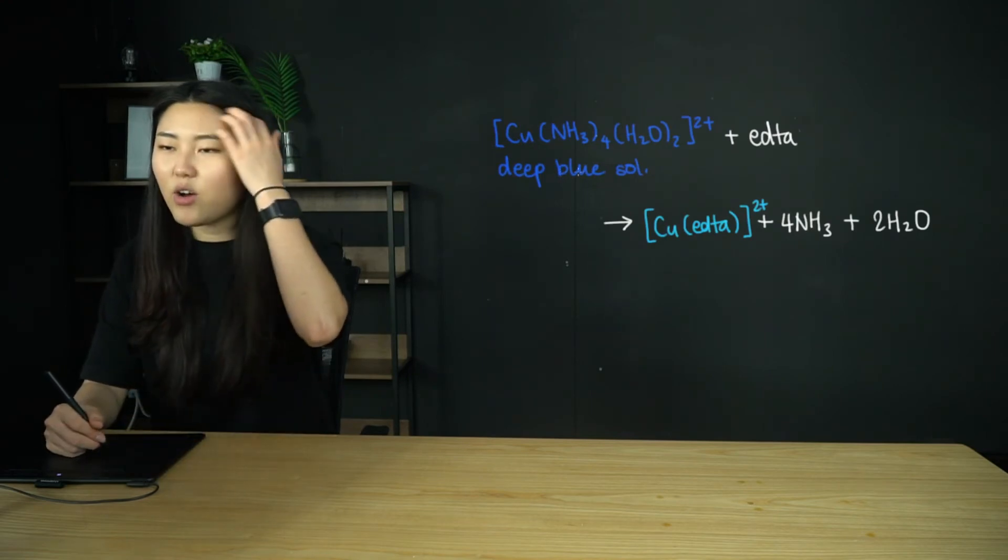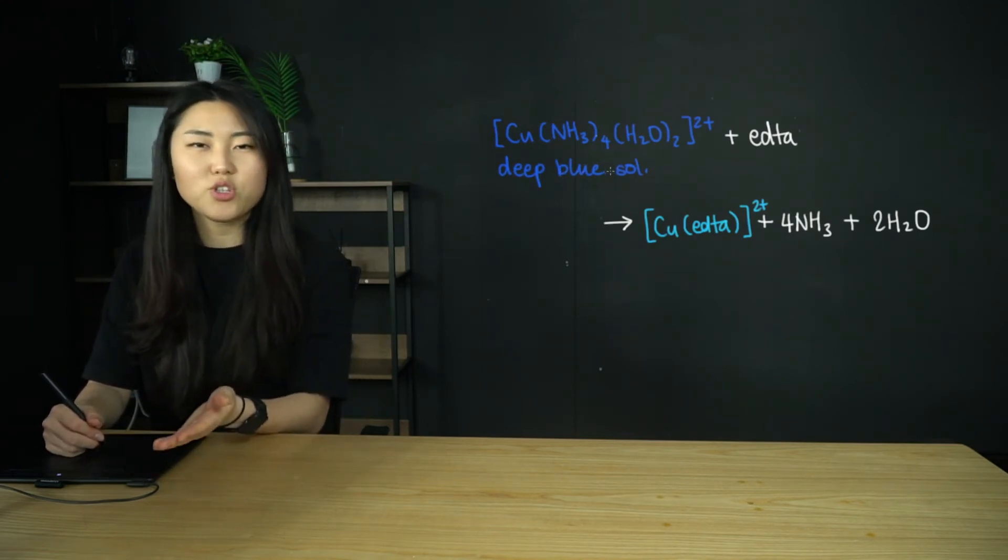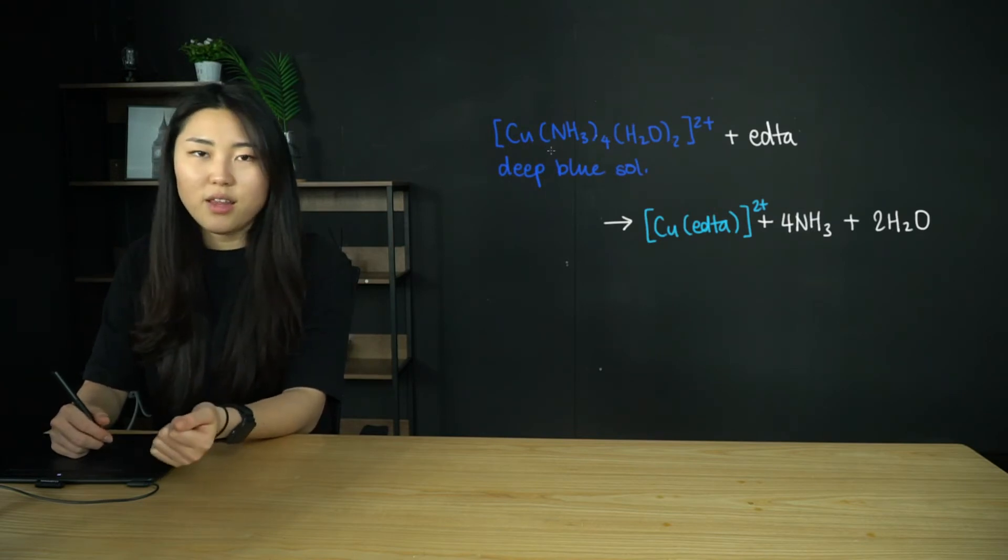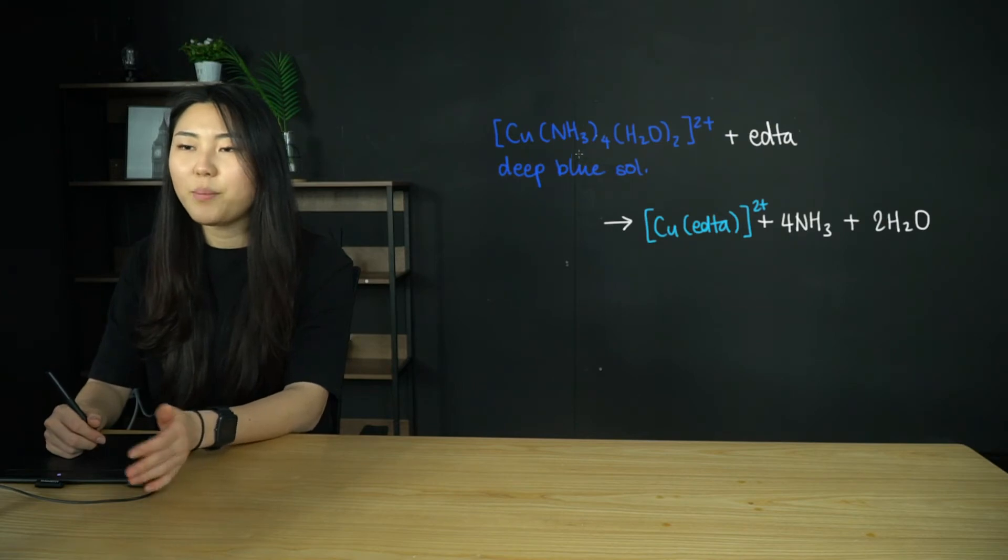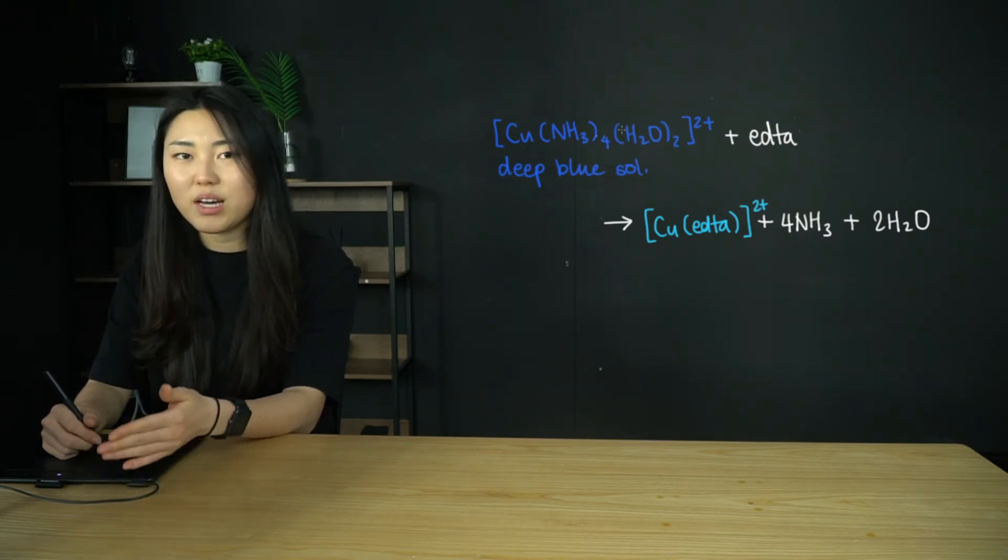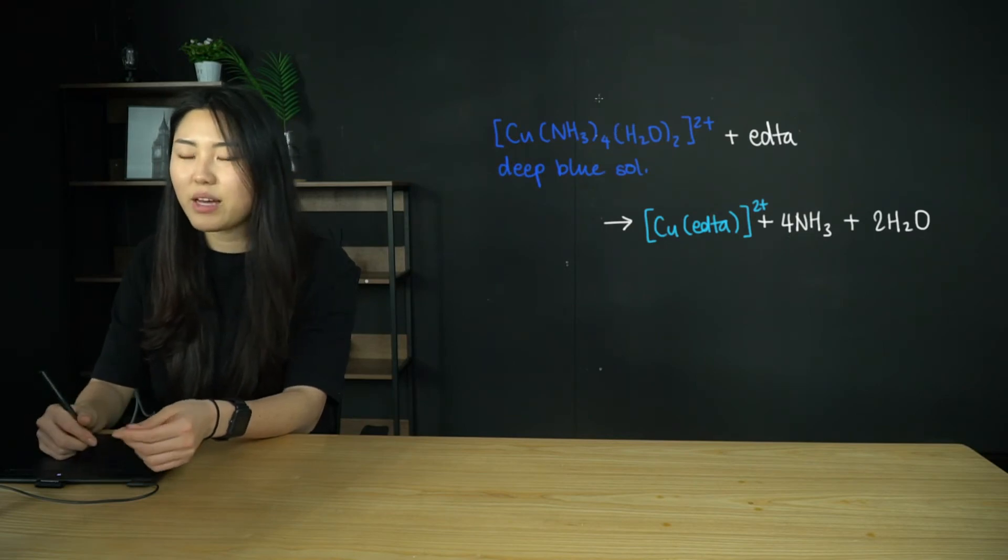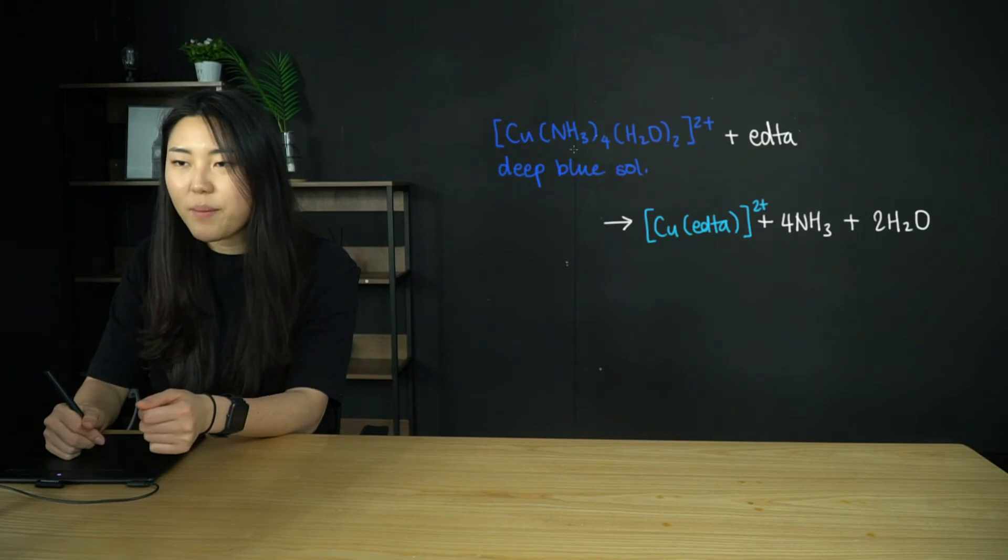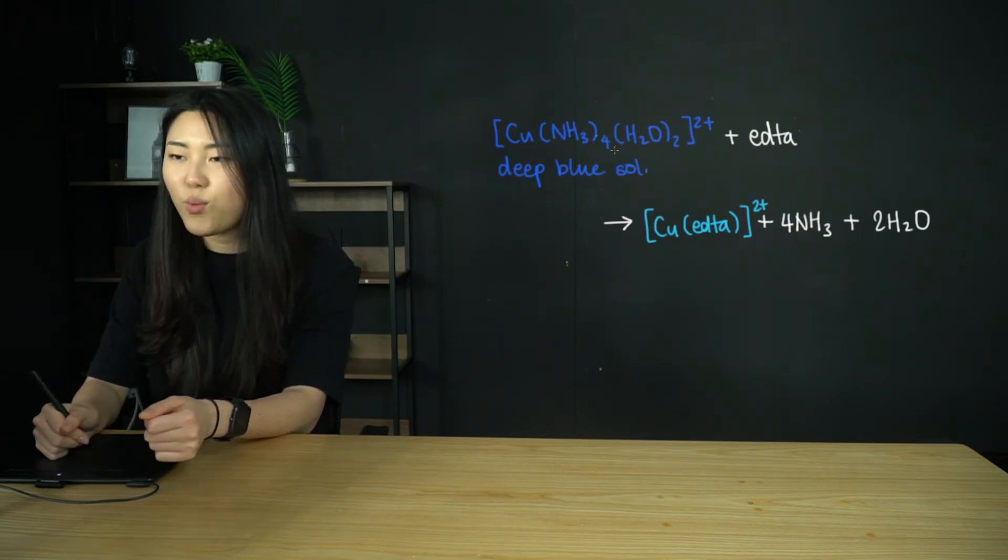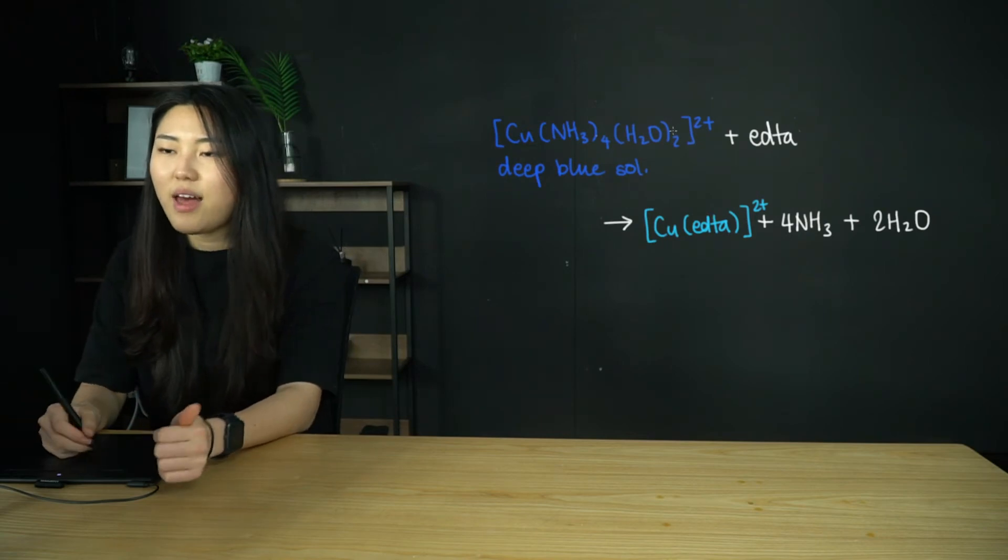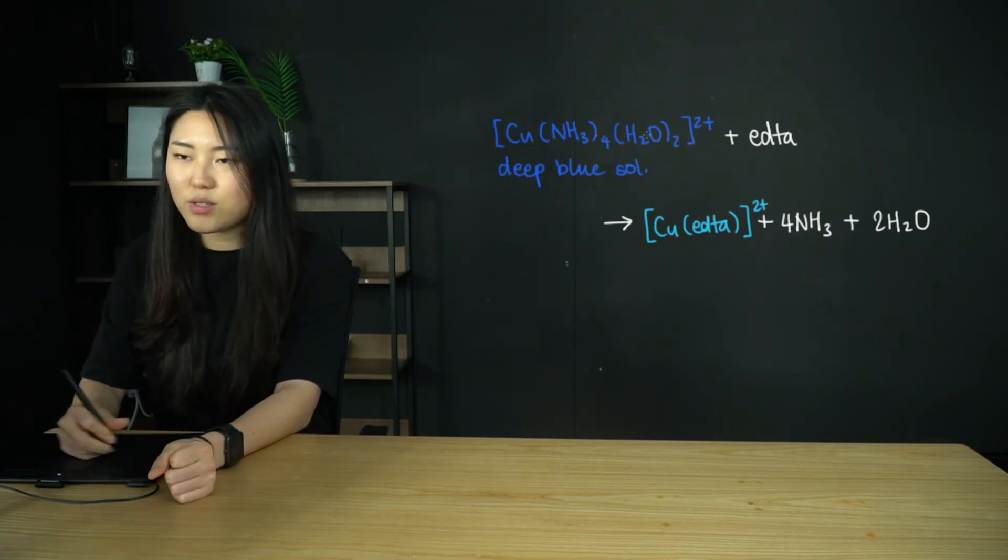I will be discussing the entropy changes that occur. Here we have the copper 2+ ion, this time not just in aqueous solution, but we have added ammonia solution to make this complex. The copper 2+ ion is going to be surrounded by four ammonia molecules and two water molecules.